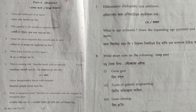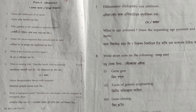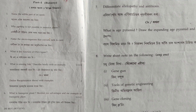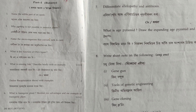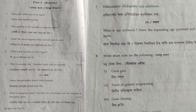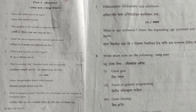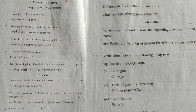Next question: differentiate allelopathy and antibiosis. Allelopathy is a process shown by plants where some plants produce chemical substances that inhibit the growth of other seedlings around them. Antibiosis is shown by microorganisms, where some microorganisms produce toxic substances that are detrimental to other microorganisms.